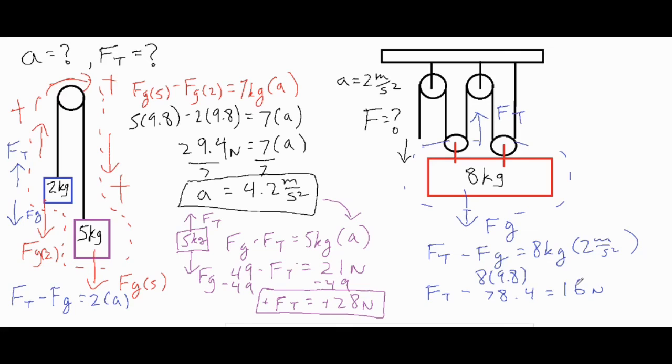If we add 78.4 to both sides, then we get an FT value of 94.4 newtons.